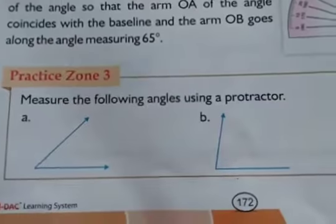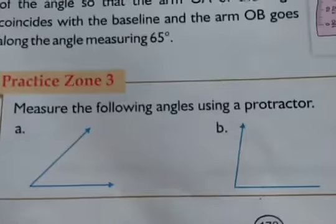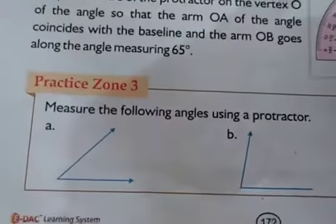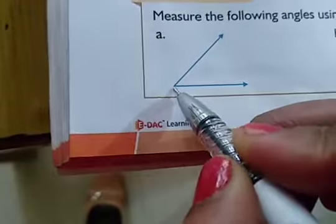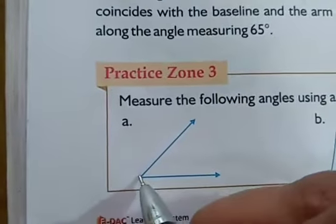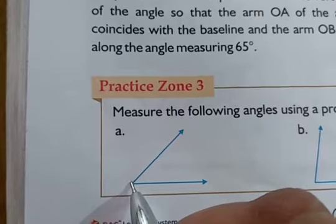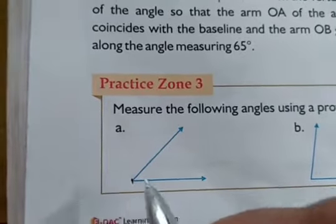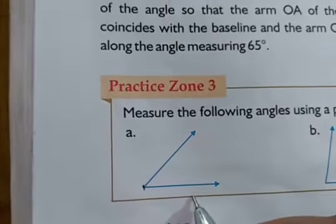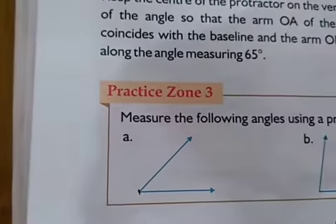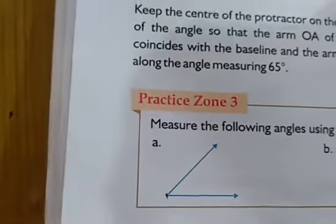With the help of the protractor, you will measure these angles. This base line should be straight. This center should be kept here. Keep the center of the protractor on the vertex O of the angle, so that the arm coincides with the base line of the protractor.